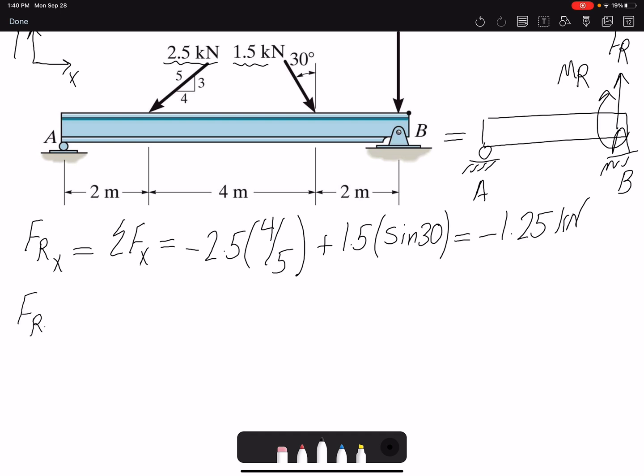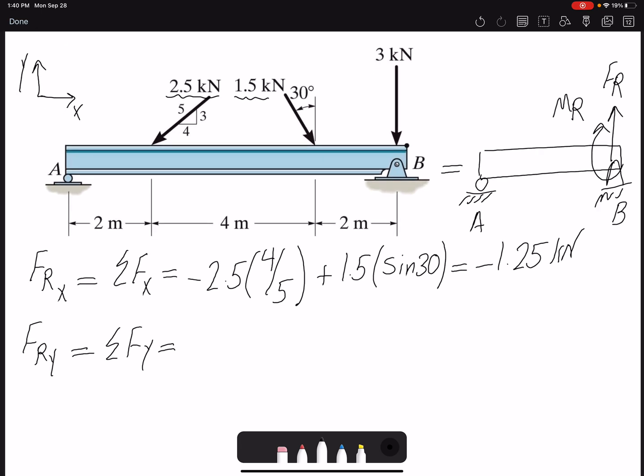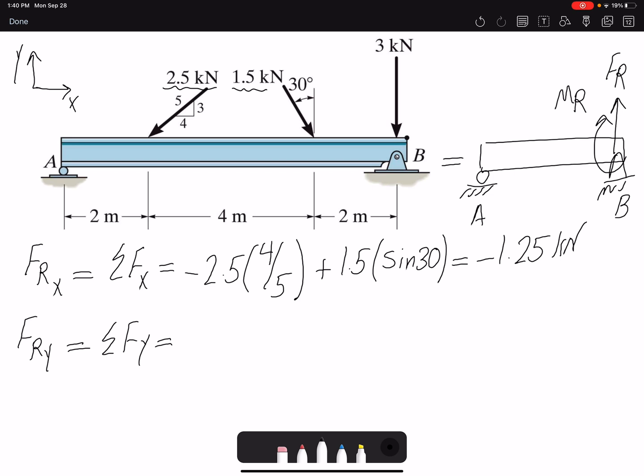Same thing for y component, summation of forces in y. In y direction, all our forces are going to have a component. So for 2.5 would be 3 over 5, if we are interested in the vertical component. Then our 1.5 would be cosine 30. And our 3 kilonewton force. So at the end, we will have negative 5.8 kilonewton.